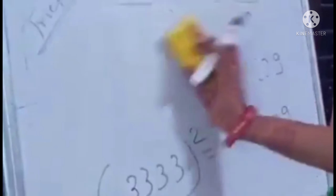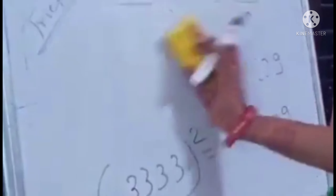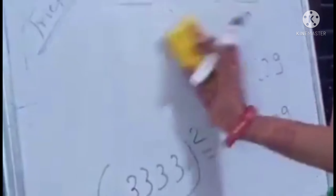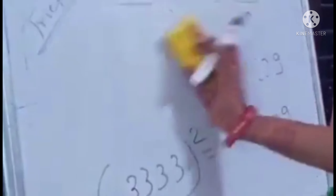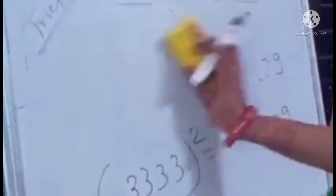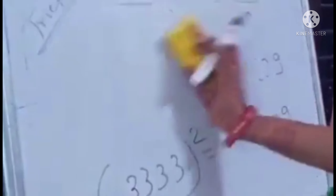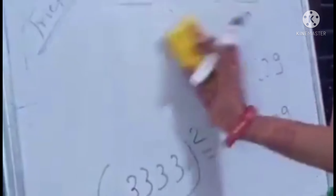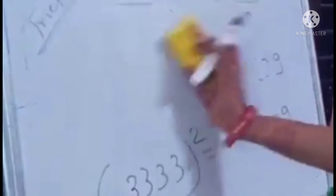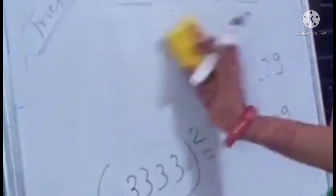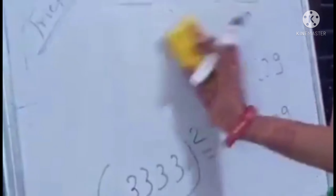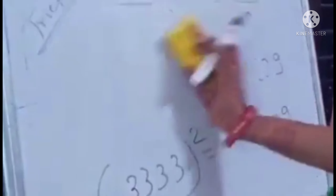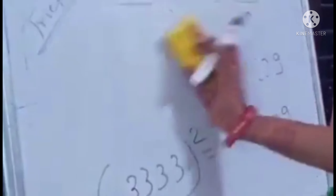Take 65 squared. First we write 5 × 5 = 25. I have written that here. Now the next number is 6. What comes after 6? It will be 7. Now we multiply 7 × 6 = 42. The answer is 4225. For 85 squared: same thing, 5 × 5 = 25, write 25. The second number is 8, next of 8 is 9, and 8 × 9 = 72. Answer is 7225.